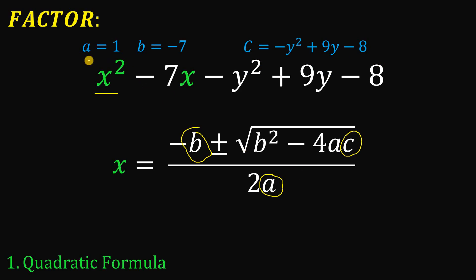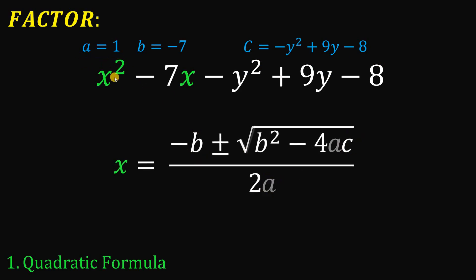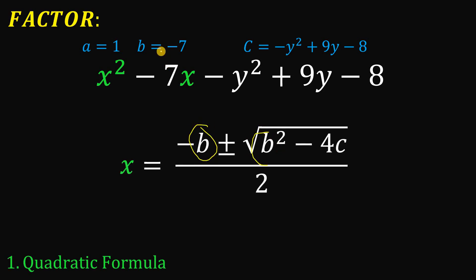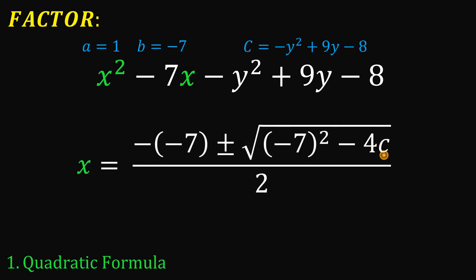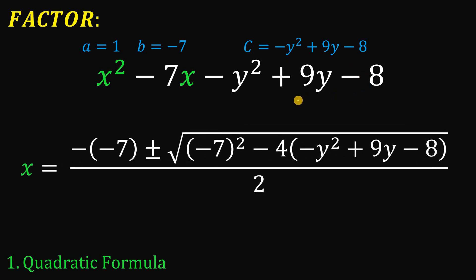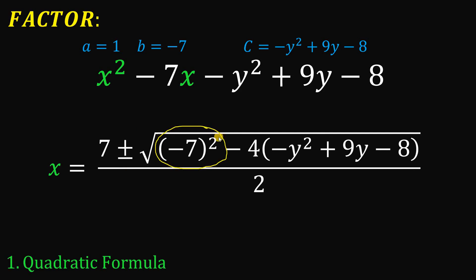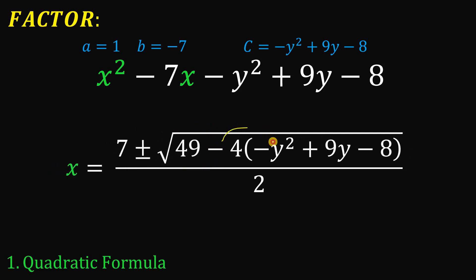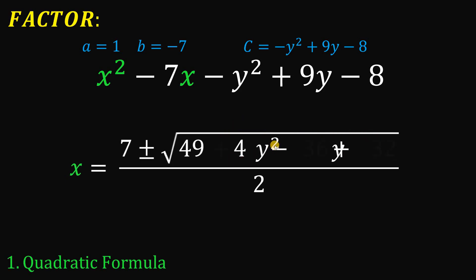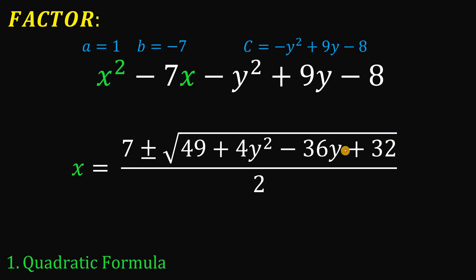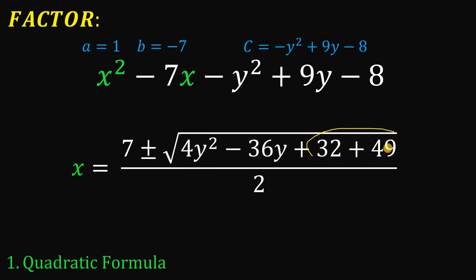Now let's substitute all those given values — replacing a with 1, b with negative 7, and c with negative y squared plus 9y minus 8. Simplifying: negative of negative 7 is positive 7. Negative 7 raised to the power of 2 is 49. Distributing negative 4 gives us positive 4y squared minus 36y plus 32. Combining constants 49 and 32 gives us 81.